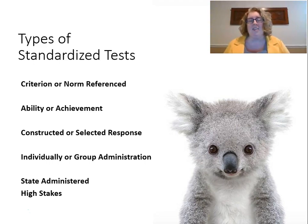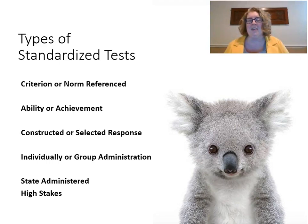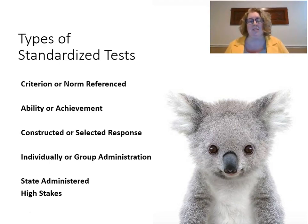We also talk about constructed versus selected response. Constructed response is when students have to come up with the answer themselves, and selected response is when they're choosing from a set of choices. Additionally, individually administered tests are given one-on-one, while group administered tests are typically given on a computer or test booklet to a whole group at once, though a group test could still be given one-on-one.